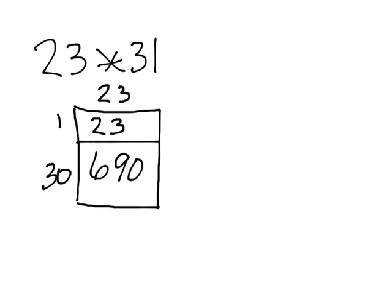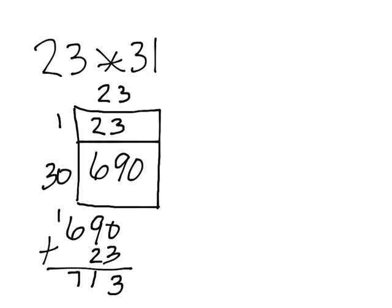Now you add your partial products to find the total area of our rectangle. 690 plus 23. 3 plus 0 is 3, 9 plus 2 is 11, 6 plus 1 is 7. Therefore, 23 times 31 is equal to 713. Now to solve this problem using the standard algorithm,